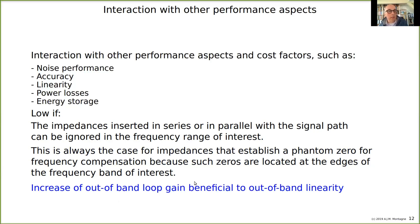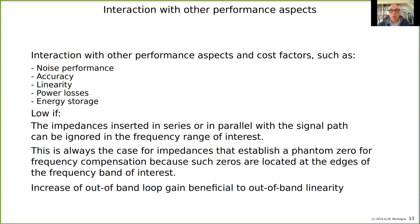The power of a phantom zero is that we use an existing attenuation in the loop to reduce it at higher frequencies — we reduce the attenuation. If there was no attenuation, you would first have to create one, and that's the price you pay. Increasing out-of-band loop gain is also what you're doing with a phantom zero: beyond the frequency of the zero, loop gain increases, which means less distortion. That's why we discuss only phantom zeros in this course — it's the best compensation method there is, and an effective and powerful one.